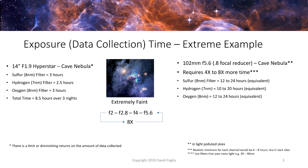If you do the math, converting the 2.5–3 hours per channel, you're looking at 20 to 24 hours, which is not practical. I think I might have captured too much data on the Hyperstar side — there are a lot of diminishing returns in terms of how much light you can capture. At a minimum I'd probably need around 12 hours for sulfur, 8 for hydrogen, and 12 for oxygen. The reality is most of us just don't have time to do that.